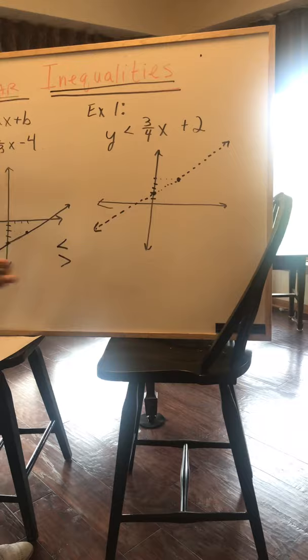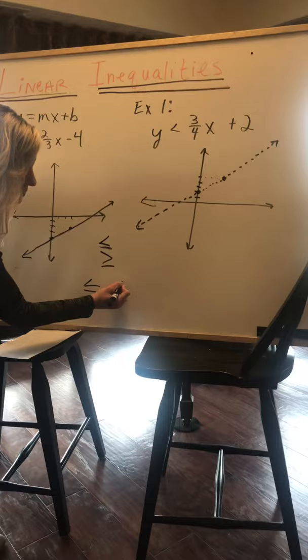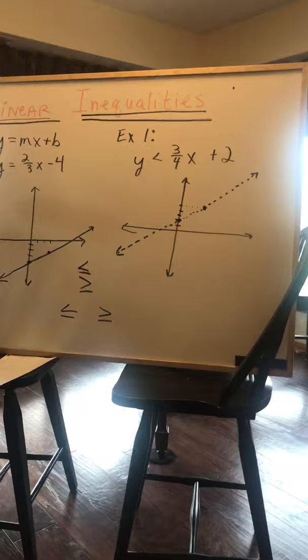If it has a little or equals to sign underneath—less than or equal to, greater than or equal to—in that case, it would be a solid line. So now we have to decide where we're going to shade because it's an inequality. So that means only one side is going to hold true for this inequality.